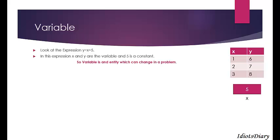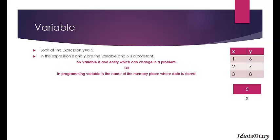Suppose you have a variable x with the value 5. During the program, you can change the value of x over time, and the value changes in the same memory location. So we can say that the variable is the name of the memory where the data is stored. Another definition: a variable is like a cup of tea in which you can change the content every day.